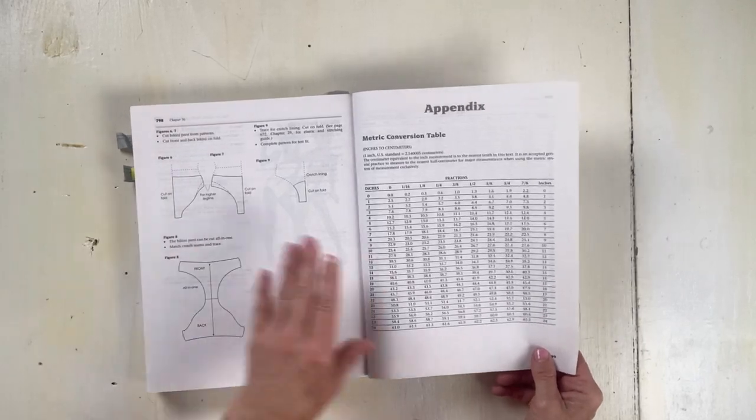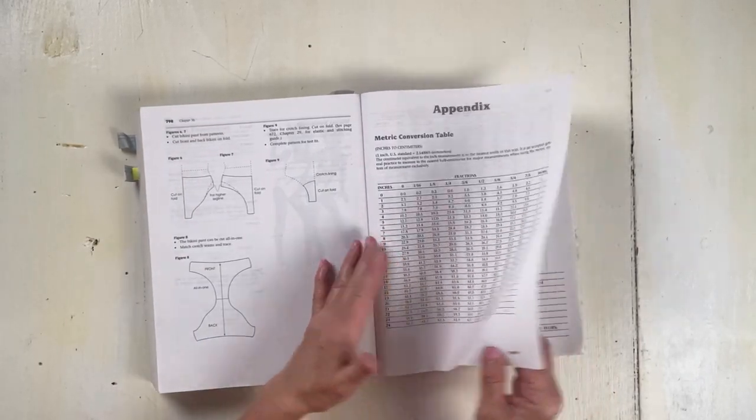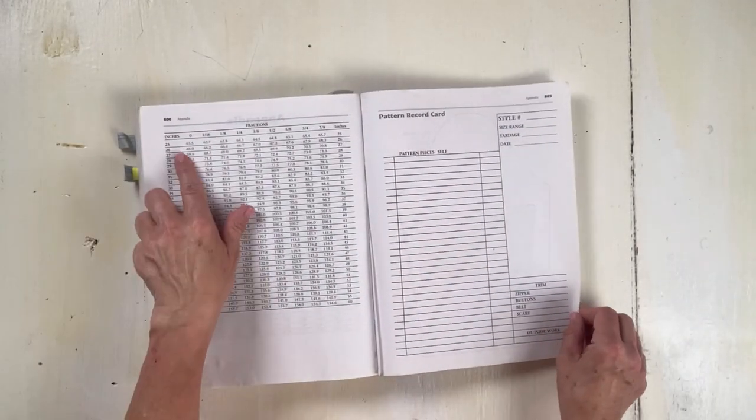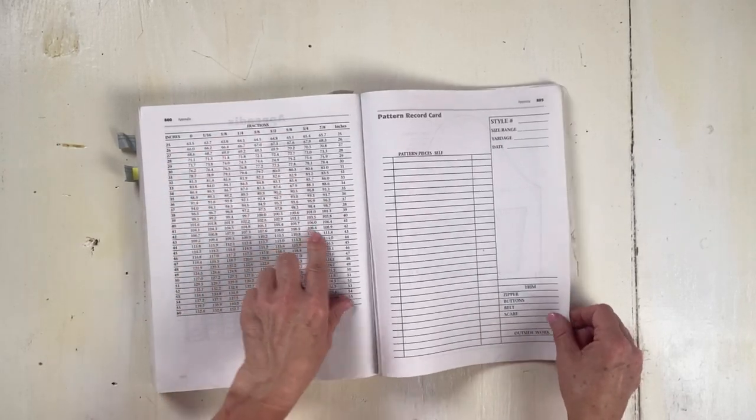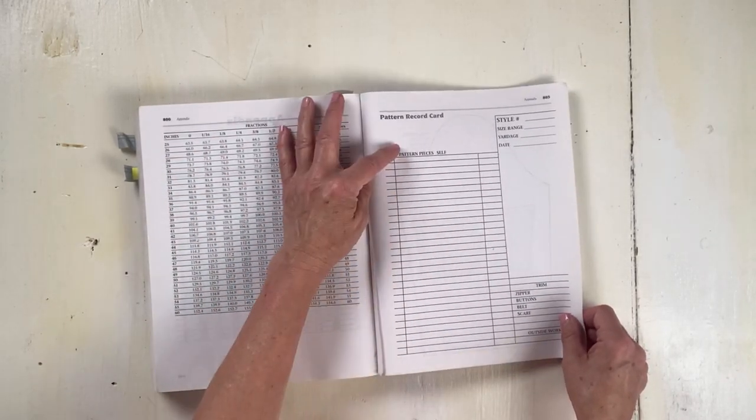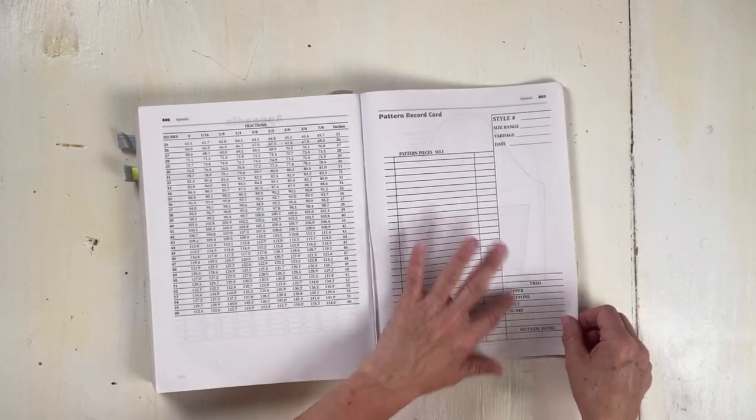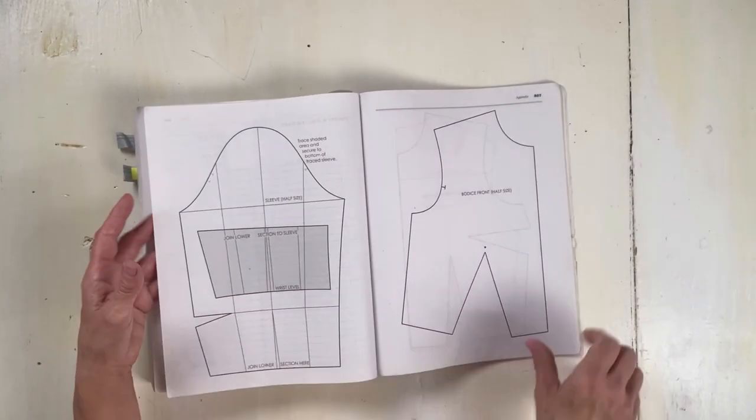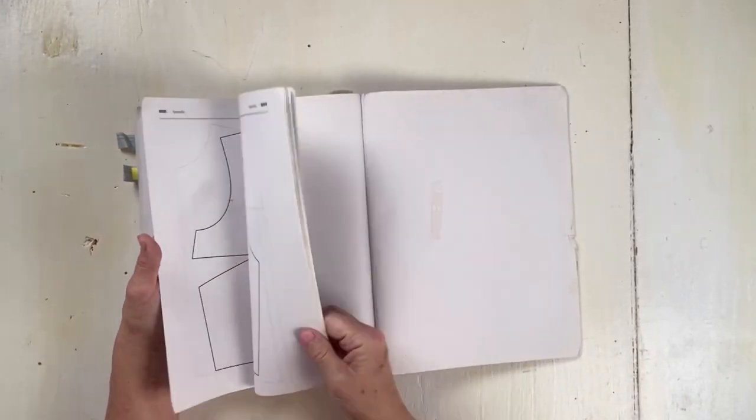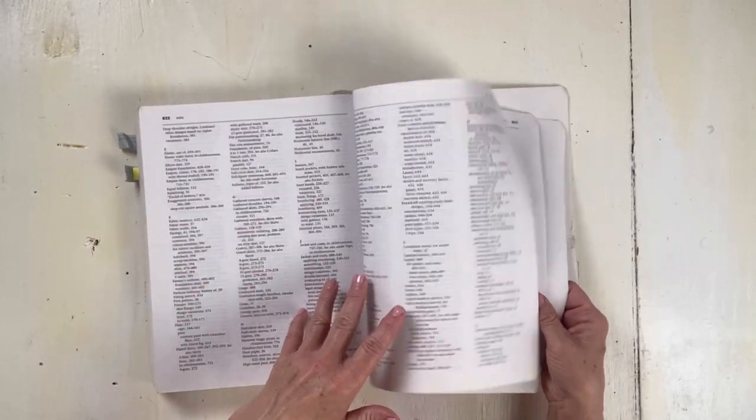It gives you a metric conversion table. It gives you the inches and inches to fractions. You have a pattern record sheet, so pattern pieces and then things you'll need, the trim and the style number.